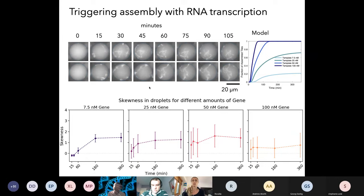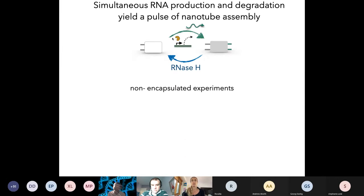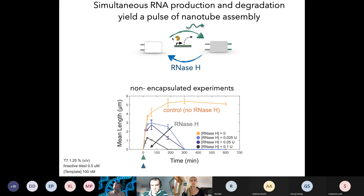The last thing I want to talk about is, here, actually, we did not have degradation. We only had production of RNA. If you do add degradation, in non-encapsulated experiments, what you observe is that you get a transient production of nanotubes. That's because, initially, the polymerase that makes RNA has a burst of activity, so it kind of takes over the reaction. You have a buildup of RNA forming, and then as time progresses, RNA polymerase loses activity, but RNase H appears to be a more stable enzyme. And so, degradation takes over at longer times.